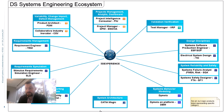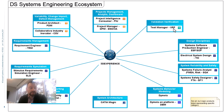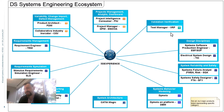Then we have validation and verification — test manager, VRP role — where we are able to include the model we are testing. We can do test cases, execute those test cases, describe how we will execute them manually, or launch process composer to simulate and analyze models. Verification is a very big part of system engineering. Verification, dashboarding, and many other things go hand in hand with system modeling and allow us to manage data in a single platform.